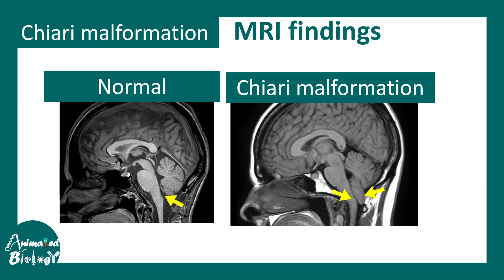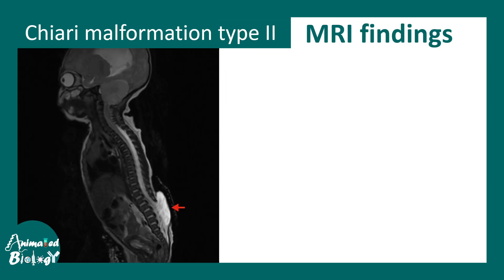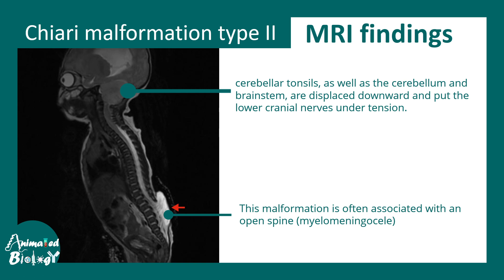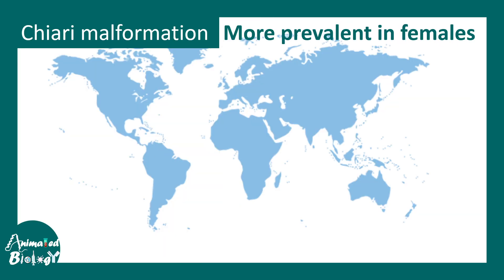Diagnosis can be done using MRI. In the Chiari malformation, the yellow arrow shows displacement of the cerebellar tonsil through the foramen magnum. In Chiari type 2, or Arnold-Chiari malformation, there is myelomeningocele, which is a key feature in spina bifida. It is often associated with spina bifida, and one can see that several parts of the cerebellum and brainstem have descended downward from the foramen magnum.